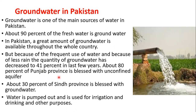The ground water is decreasing, but with the grace of Almighty, almost 80% of Punjab province is blessed with unconfined aquifer, meaning ground water is available there. About 30% of Sindh's land is also blessed with ground water.